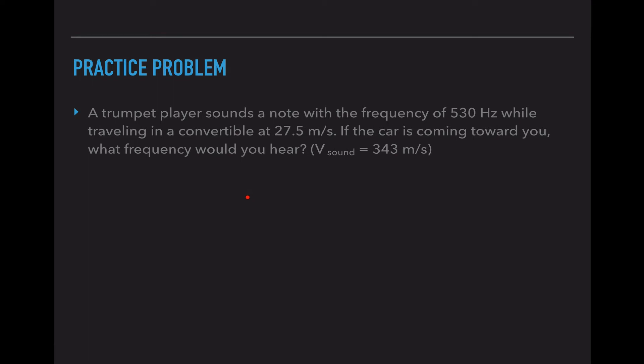So in this example, you are going to be stationary. So we have the equation, the perceived frequency is equal to the actual frequency times the velocity of sound plus the velocity of the observer divided by the velocity of sound minus the velocity of the source. So I have actual frequency is 530. I have velocity of the source is 27.5. Velocity of the observer is 0.